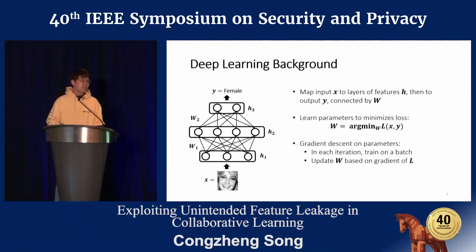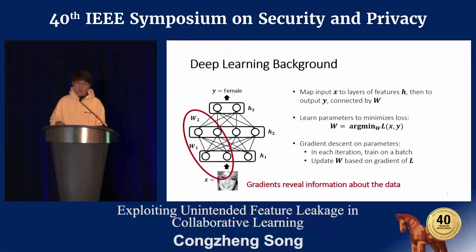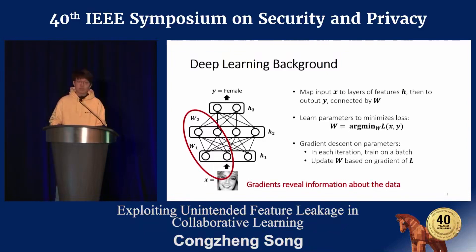The goal of learning is to find the optimal set of parameters that minimize some loss function. The minimization can be done using gradient descent — in each iteration of training, we take a batch of training data, compute the loss and the corresponding gradients, and then update the model parameters in the negative direction of the gradient. One of our key observations is that gradients can reveal information about input data, which enables our inference attacks in the collaborative learning setting.